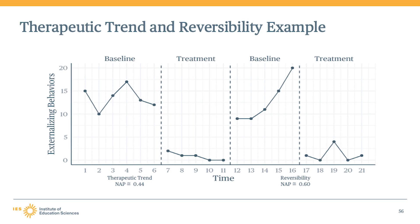This slide contains an example treatment reversal design drawn from the handbook. You can try to calculate the non-overlap of all pairs for both therapeutic trend and reversibility from this example if you want to compare your answers. We will also demonstrate calculating the non-overlap of all pairs for a study review in detail in the module devoted to the study review guide. In this example, the treatment reversal design has a non-overlap of all pairs less than the threshold of 0.85 for both baseline trend and for reversibility. Assuming that all other requirements were met, the finding from this design would be eligible to receive a rating of meets WWC standards without reservations.